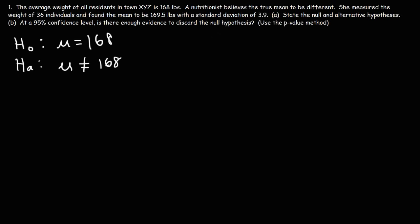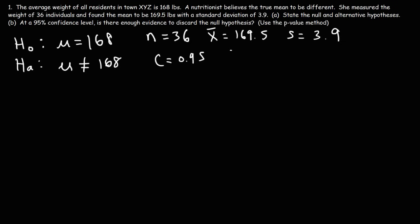Now let's move on to part B. At a 95% confidence level, is there enough evidence to discard the null hypothesis? We'll use both the traditional method and the p-value method. The sample size n is 36, the sample mean X-bar is 169.5 pounds, and the sample standard deviation S is 3.9. The confidence level is 0.95, so the significance level alpha equals 1 minus 0.95, which is 0.05.